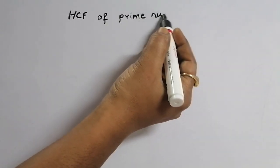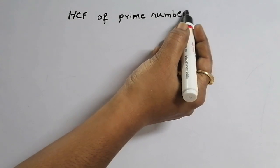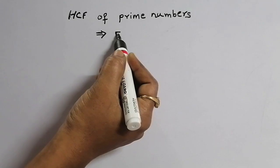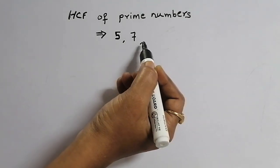Hi friends, in this video I am going to explain about HCF of prime numbers. Let us take some prime numbers: 5, 7, 13.